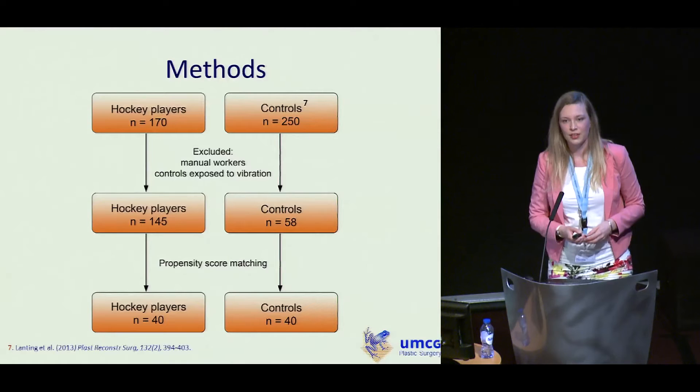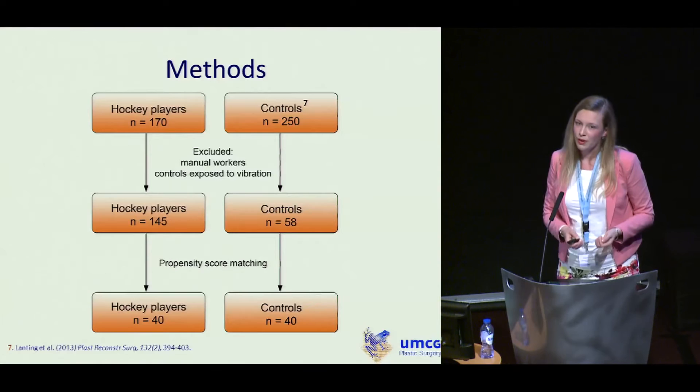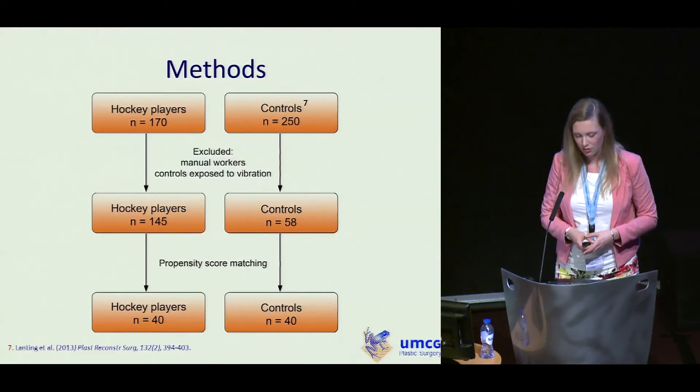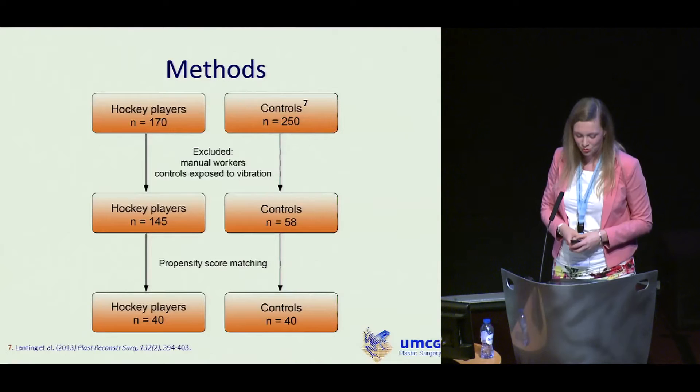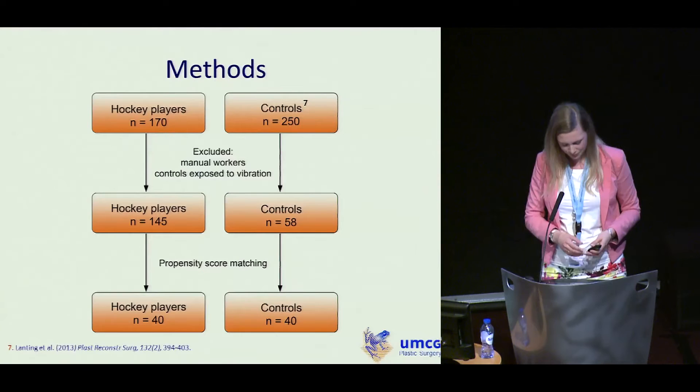170 elderly male field hockey players were willing to participate in the study, and as a control group we used data from 250 controls from my colleague Lanting. We excluded all manual workers and all controls exposed to vibration, ending up with 45 hockey players and 58 controls. These groups were very unbalanced with many differences, so we matched them and ended up with 40 pairs — 80 participants total.